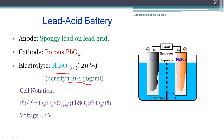We can represent this battery as: lead | lead sulfate | sulfuric acid | lead sulfate | lead dioxide | lead. The voltage of one cell is about 2 volts. There is a separator which may be made of polymer, cellophane, Teflon, or wood - it separates the anode and cathode while the acid remains in contact with both electrodes.